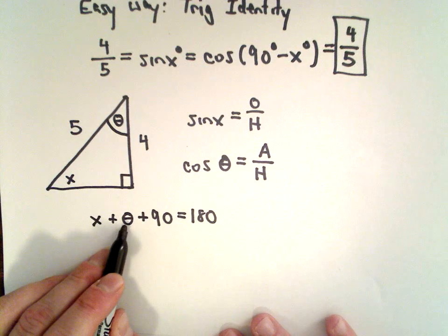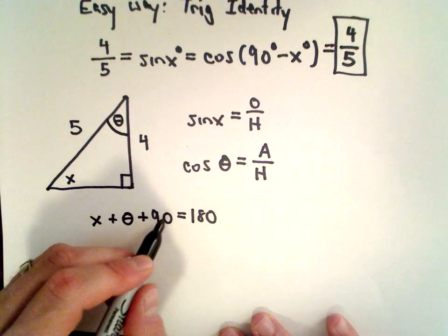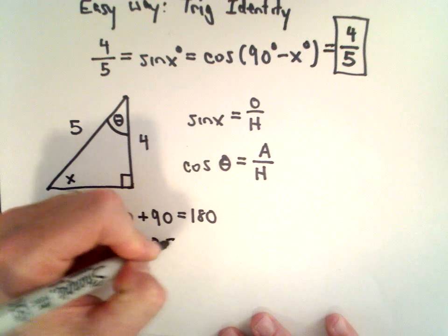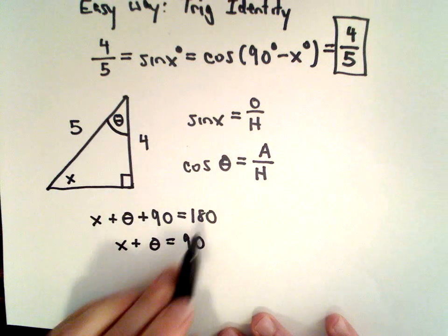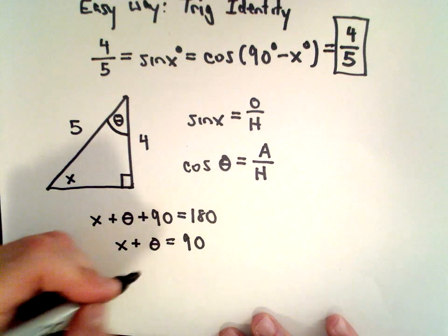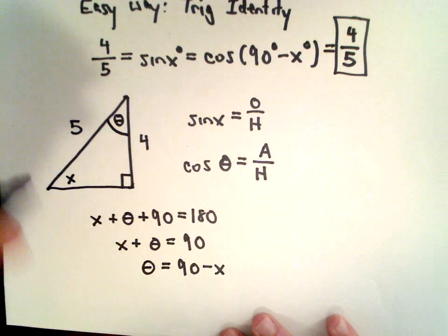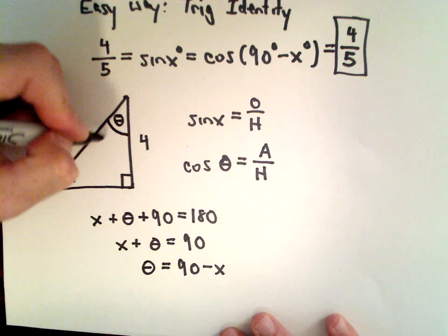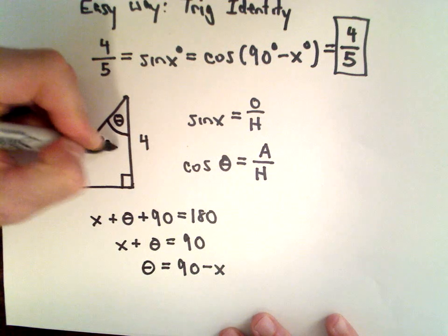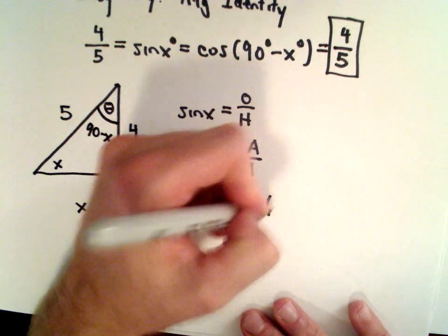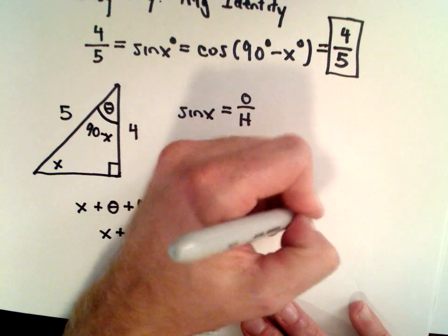So if I solve for this missing angle theta, I could subtract 90 from both sides. That would give me x plus theta equals 90. If I solve for theta, I'm left with 90 minus x, so the measure of this angle is 90 minus x. So if we want to figure out cosine of 90 degrees minus x degrees...